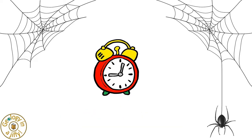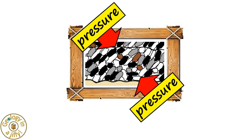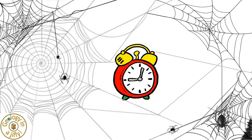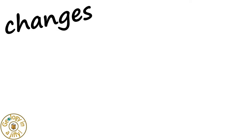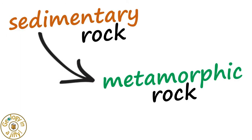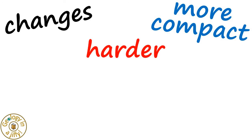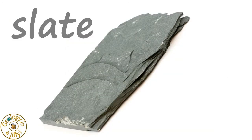Over time, as the mudstone gets further buried, the increasing pressure causes the grains to realign. Then over millions of years, as temperatures exceed 200 degrees Celsius and pressures exceed 300 megapascals, changes happen. The sedimentary rocks change to metamorphic rock, becoming more compact, harder and crystalline. The mudstone is now changed to slate.